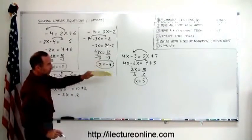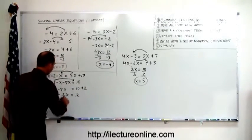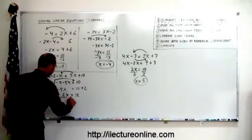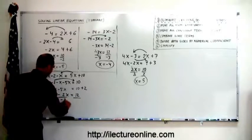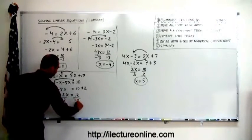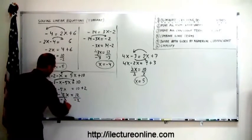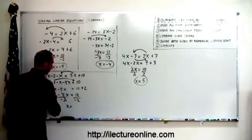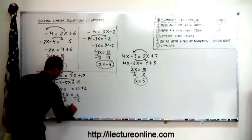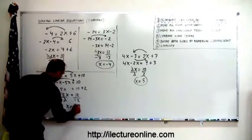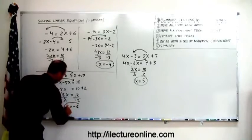Next step: divide both sides by the numerical coefficient in front of the variable, which is minus 2. Divide both sides by minus 2 — this cancels out. x equals 12 divided by negative 2, which is minus 6.